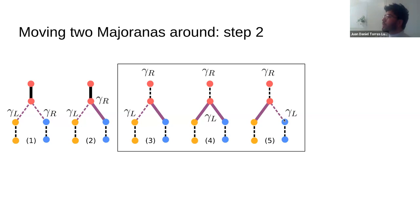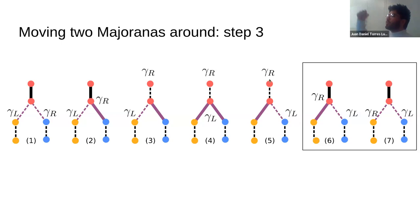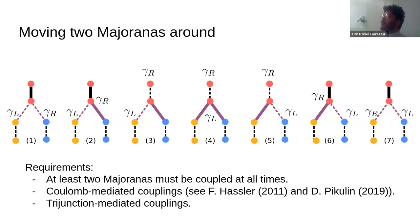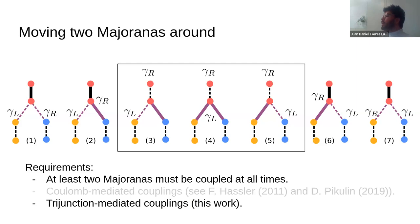The last step of the braiding protocol is moving the Majorana stored on the top back to the left. Looking at the first and last steps, the positions of gamma_L and gamma_R have been exchanged. At all points, at least two Majoranas are coupled. In this work, we do not focus on the Coulomb couplings — studied previously elsewhere — but rather on the electrostatic design of the trijunction, which pertains to steps three, four, and five of the protocol.